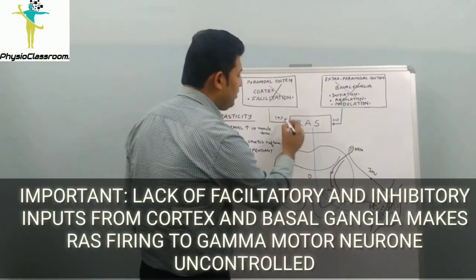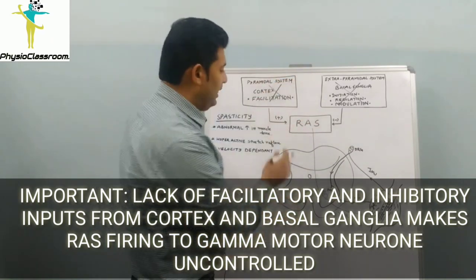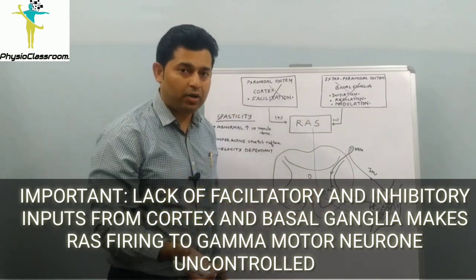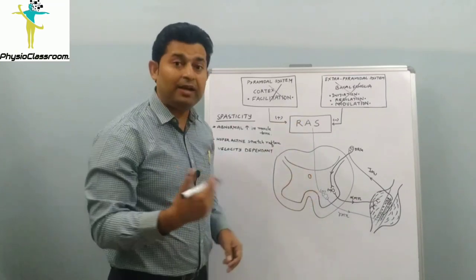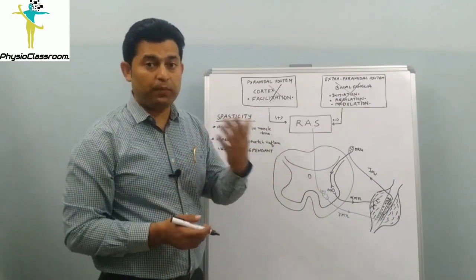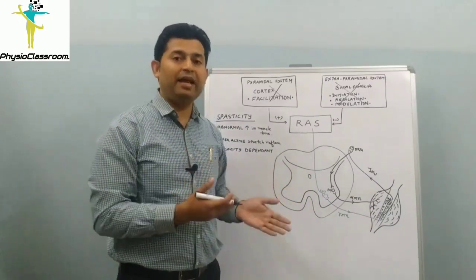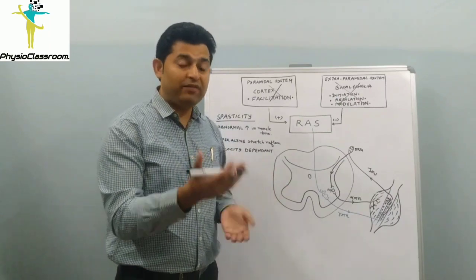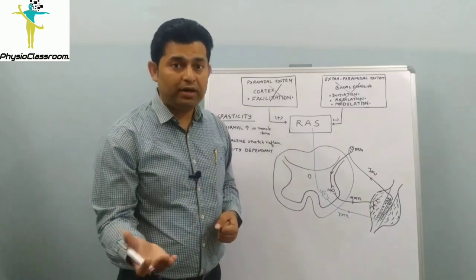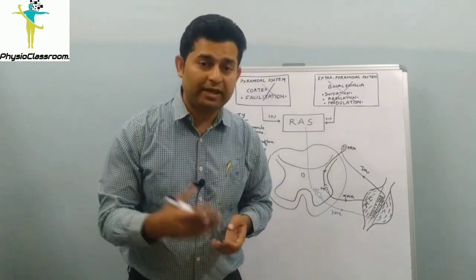Because both systems are not functioning properly, the reticular activating system is on its own with no superior control. The excitatory discharges to the gamma motor neuron become uncontrolled, depending upon the number or intensity of the sensory input the patient perceives. For example, a stroke patient lying or sitting at rest will have relatively less spasticity, but the moment they try to stand, walk, or exert extra effort, they immediately become more stiff or spastic.